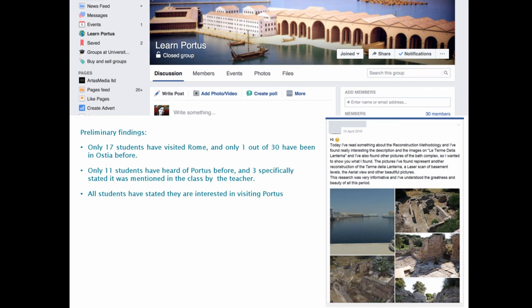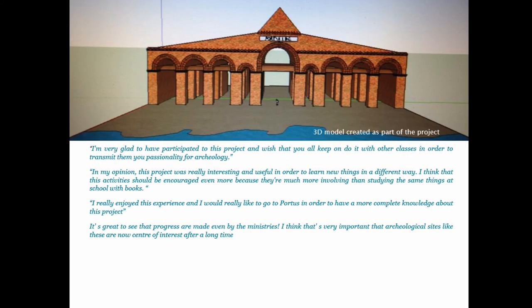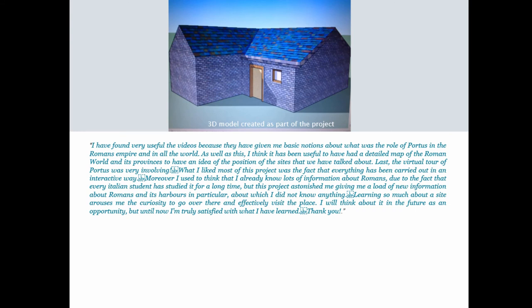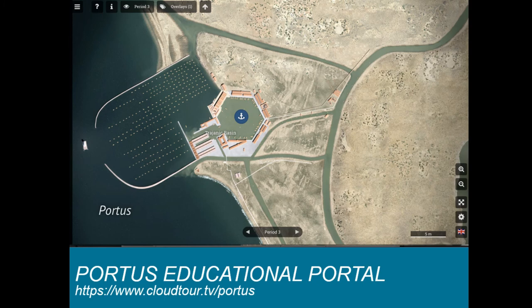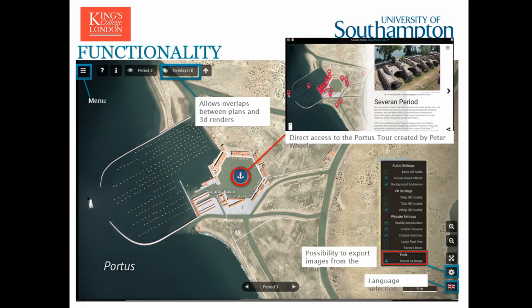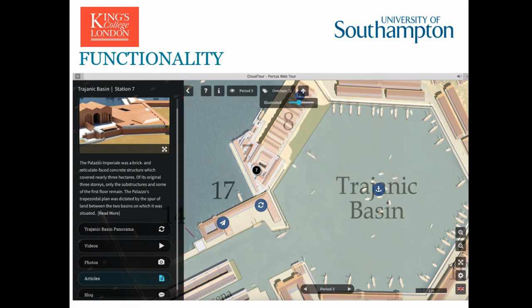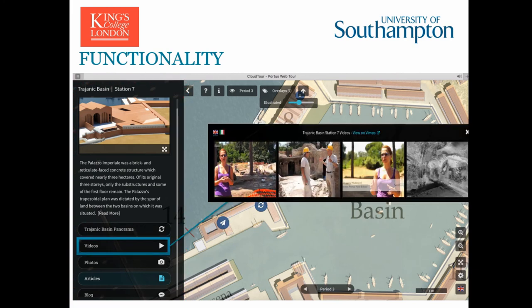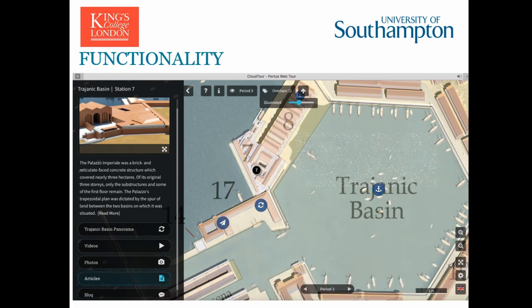We had a Facebook page and initially I thought of engaging with Twitter, but no one used Twitter, so I switched everything to Facebook. Students created 3D models and got something out of it — someone said they tried 3D modelling, found it difficult, and created a house, which is fine because at least they tried. On the second iteration, we created Portus Portal, designed to have all the visuals in a virtual space where people can navigate content as they want, with everything linked to other information — web tools, videos, and articles published about particular buildings.